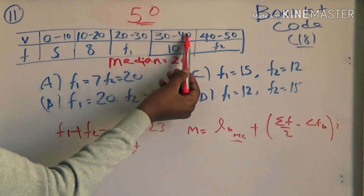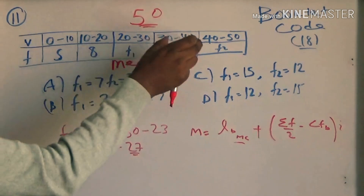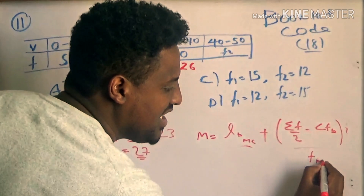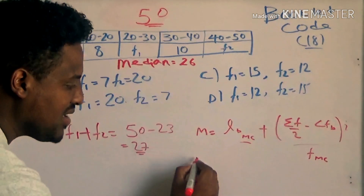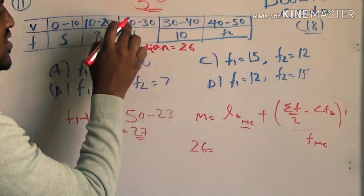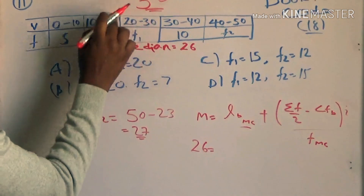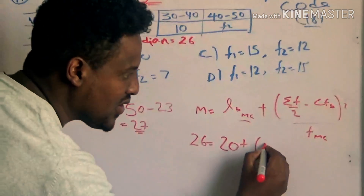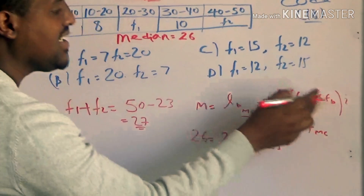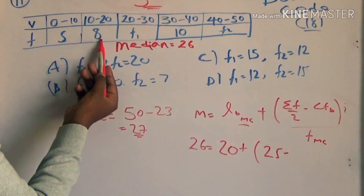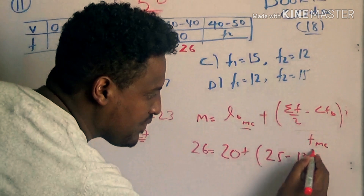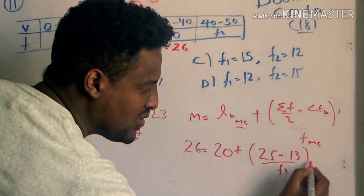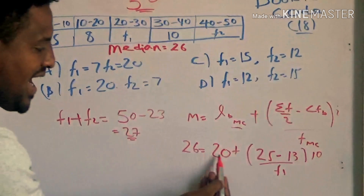The class interval is 10. The frequency of the median class is f1. The total frequency (summation of f) is 50. Using these values, we plug into the median formula. The cumulative frequency before the median class and the frequency of the median class f1 are substituted.